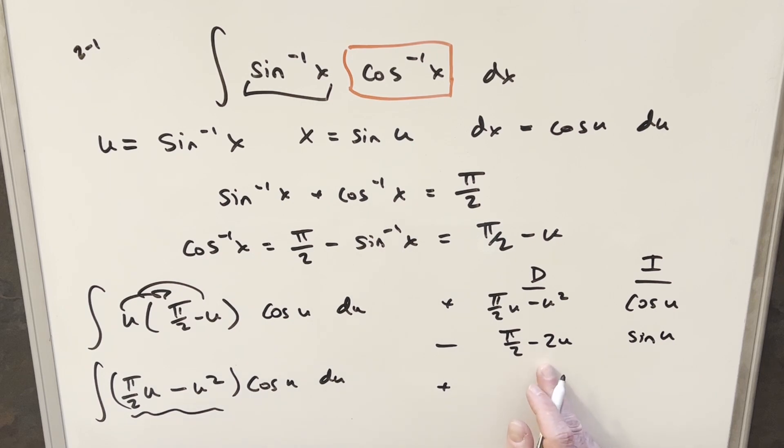Integral here is going to be sine u. Then we'll differentiate again. Derivative of π over 2 is 0. Derivative of this is just going to be minus 2. And we'll just differentiate one more time and get 0.